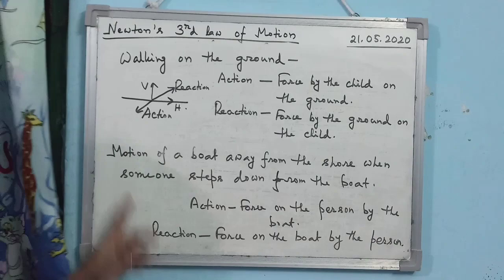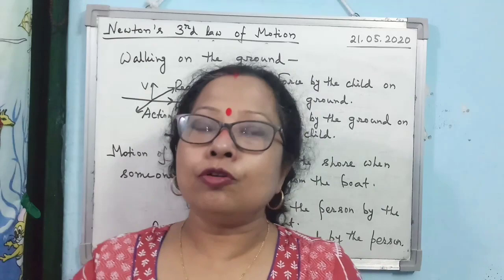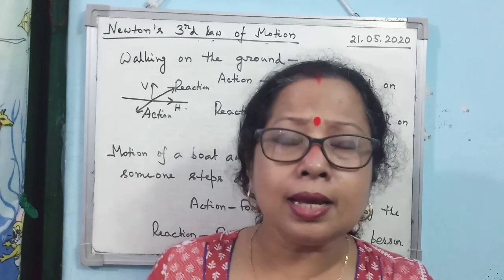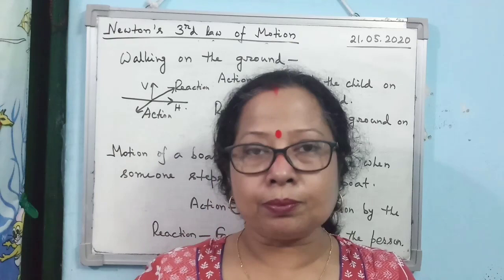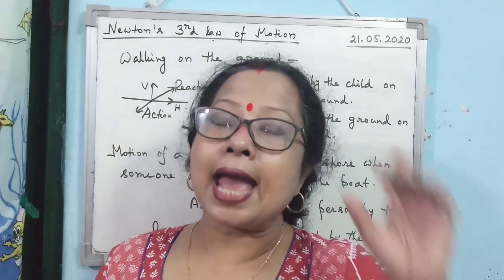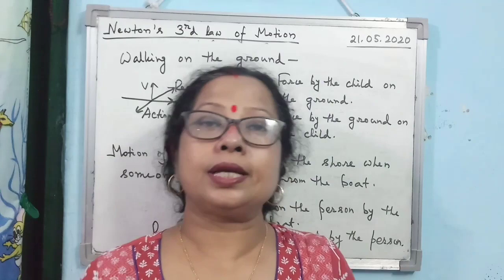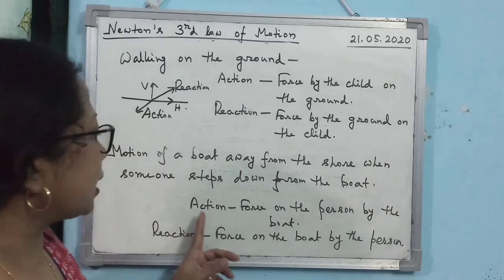The last example is motion of a boat away from the shore when somebody is jumping from the boat onto the shore. When you jump from the boat, the boat pushes you toward the shore — that is action. You apply a force on the boat in the opposite direction — that is reaction. You will see the boat move in the backward direction. Action: force on the person by the boat. Reaction: force on the boat by the person.